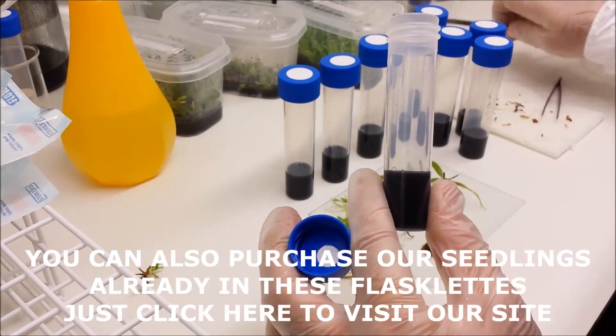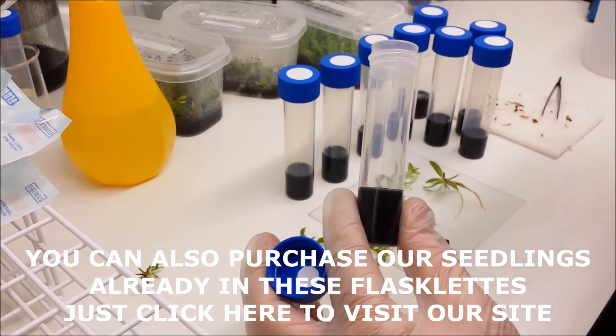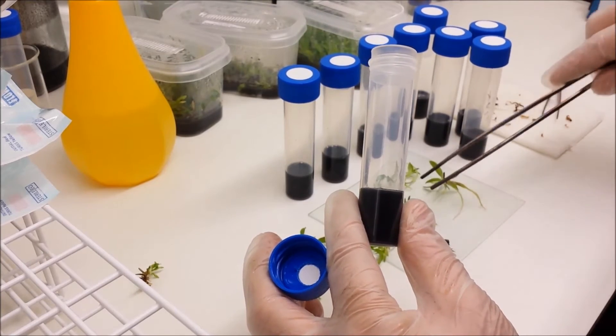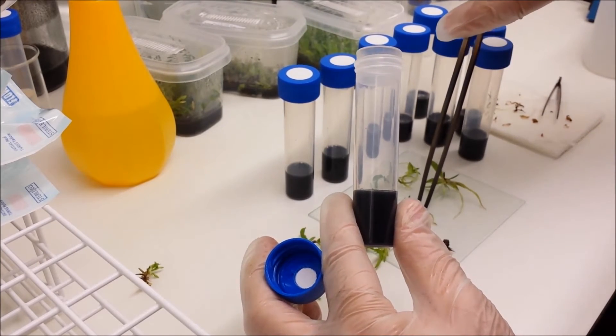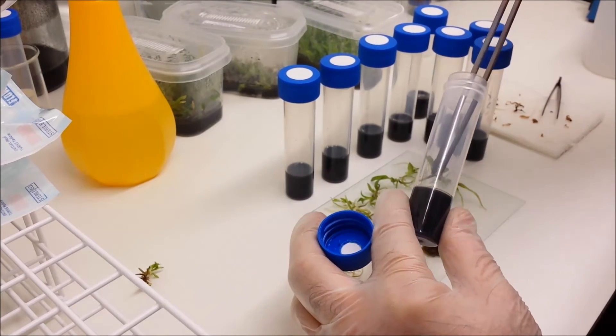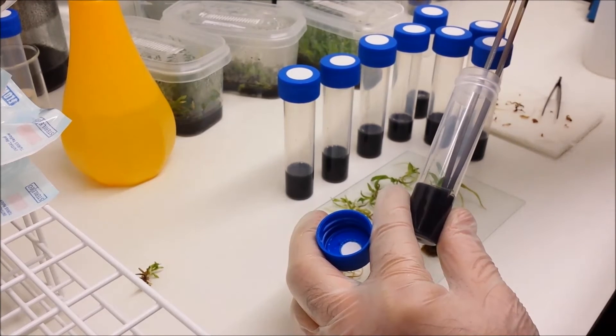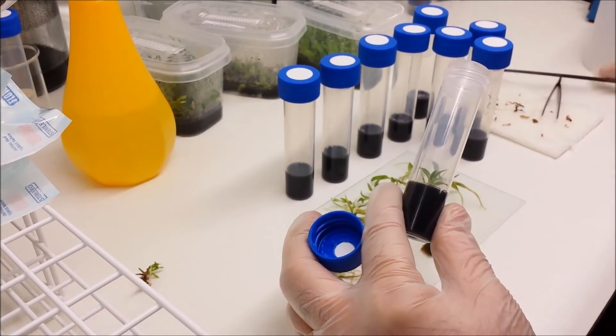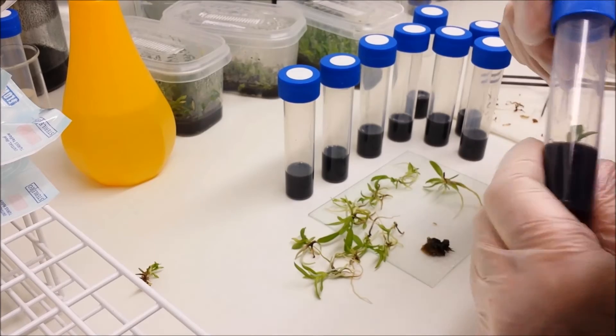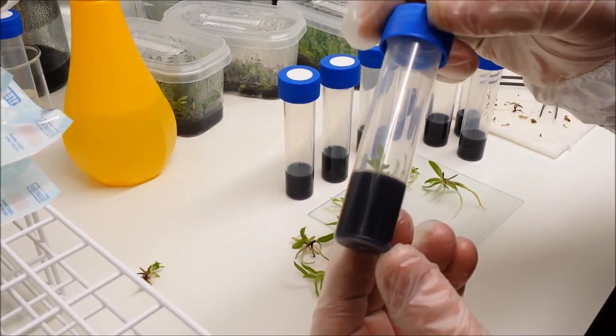So remove the lid and hold it as shown. And you'll notice we're now using the long tweezers so that we can position the plants at the bottom of the flask without a risk of dropping the tweezers in. So grasp your plant by the base, position it and gently push the roots into the medium and replace the cap as quickly as possible. There you are, that's what you're after.